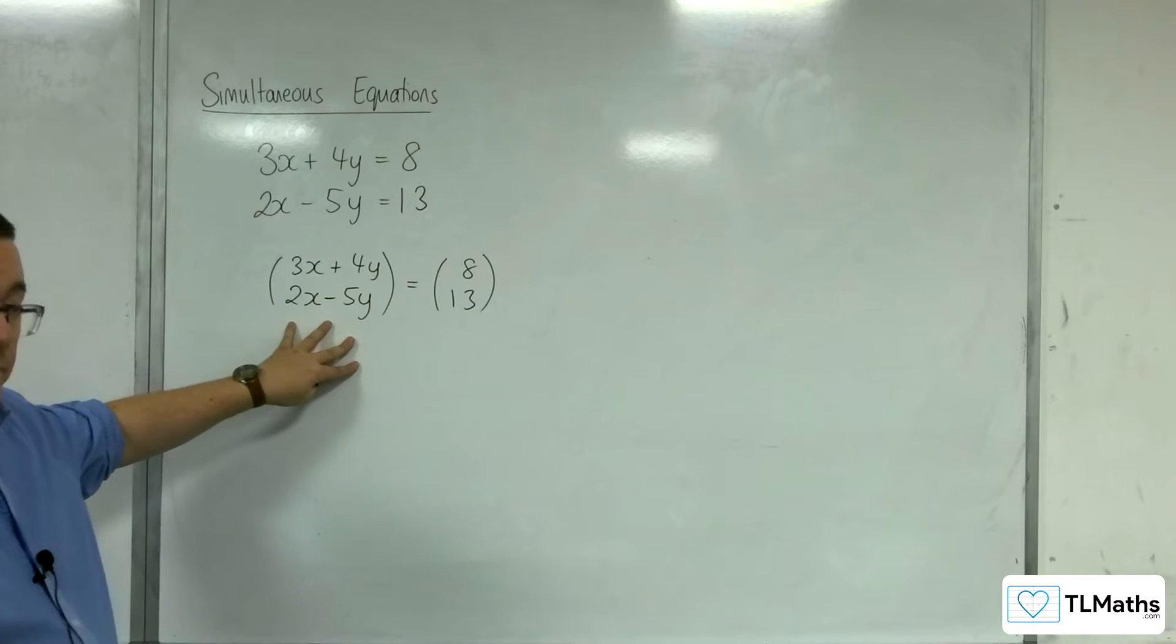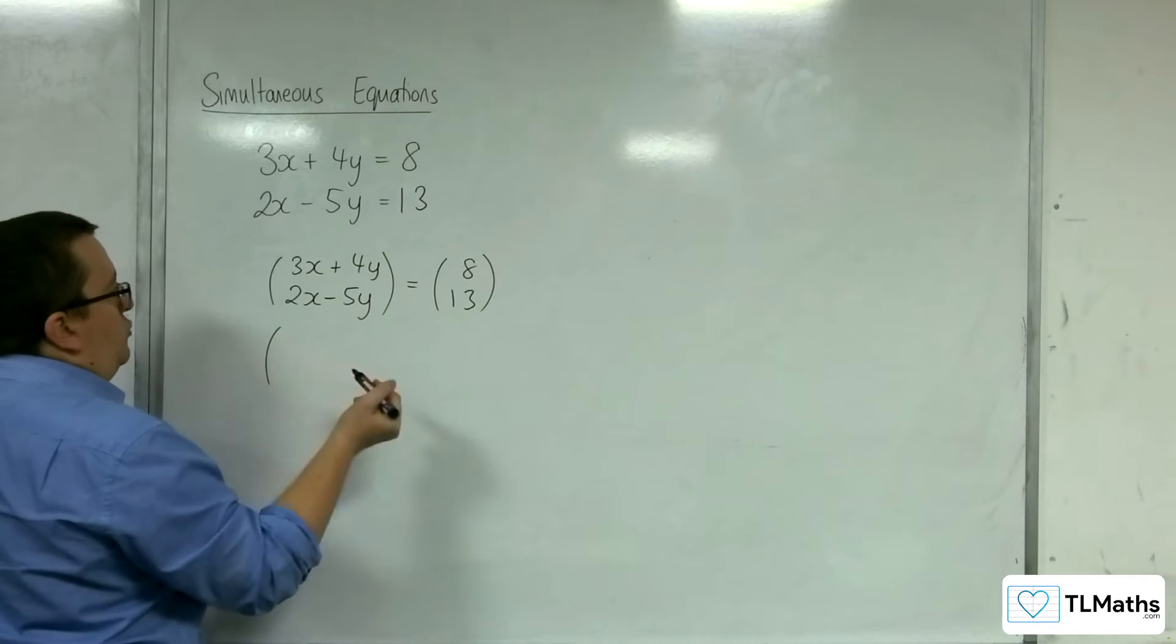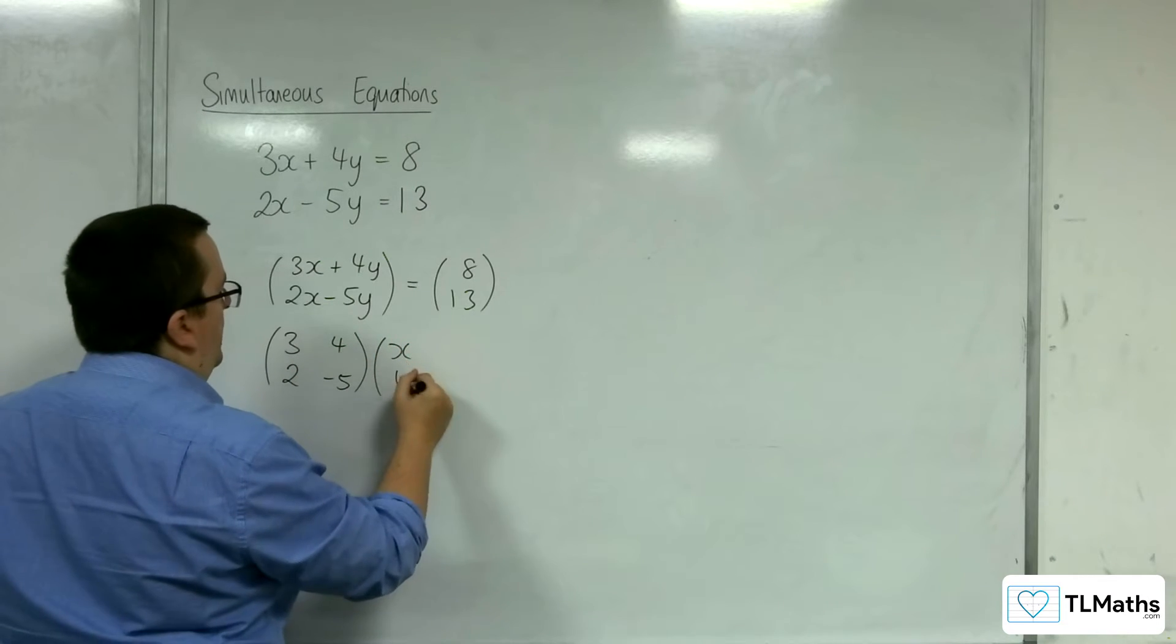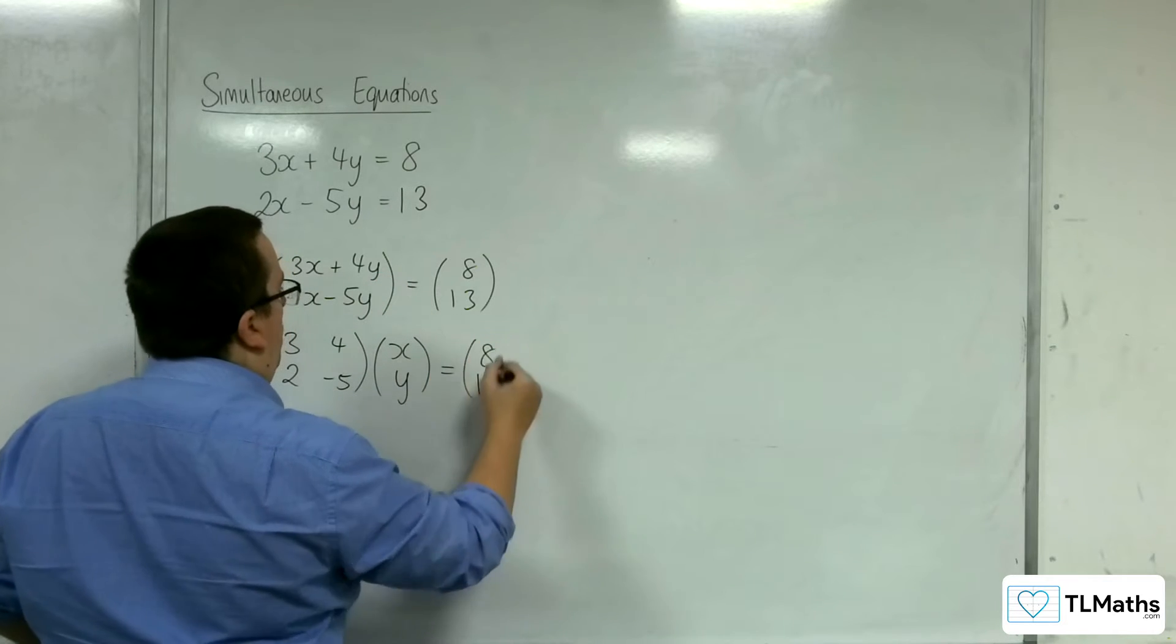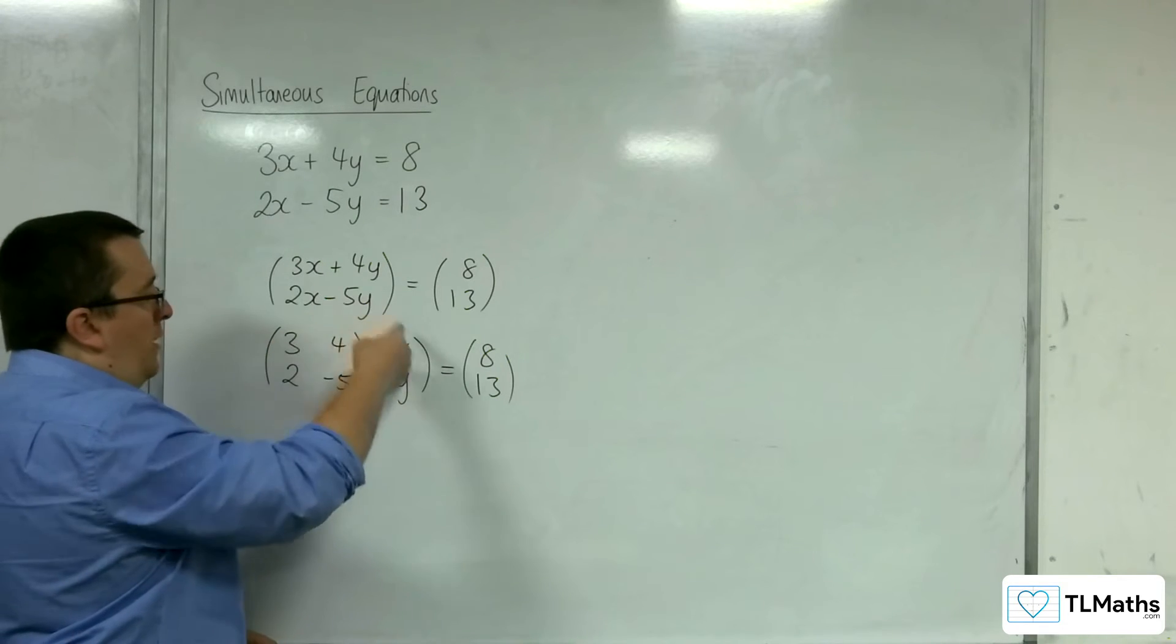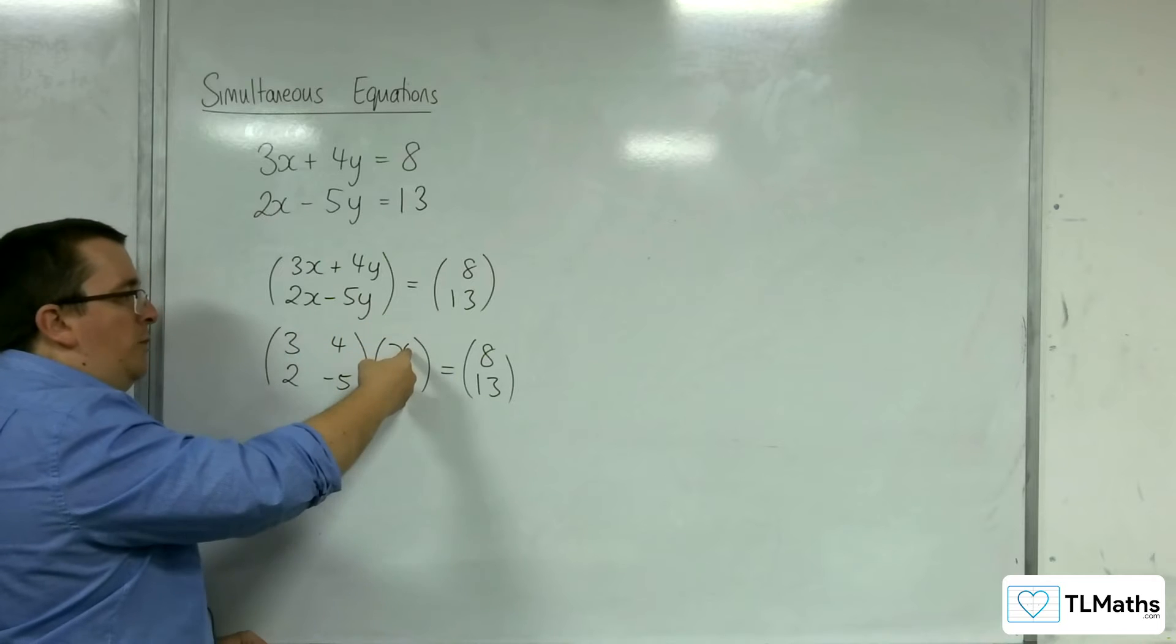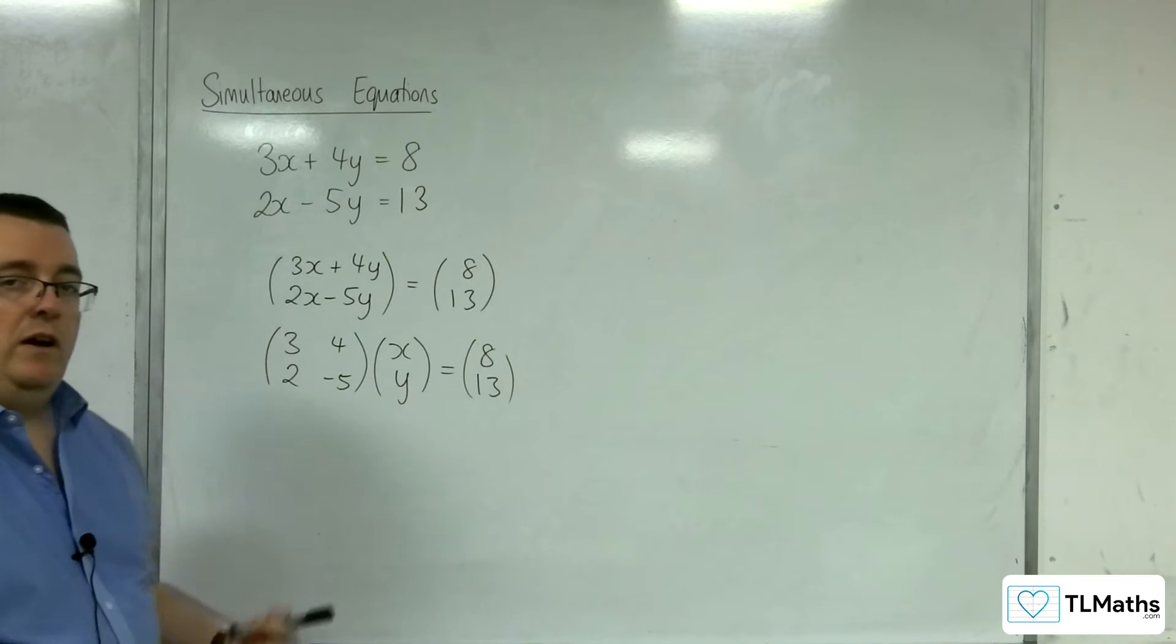Now this matrix here, what you can then do is you can say to yourself, well, I could have a matrix of the coefficients 3, 4, 2, negative 5, and multiply that with x, y, and I would get the same thing. Now why is that the case? Well, when you multiply matrices, you do the row by the column. 3, 4 multiplying with x, y, 3 lots of x, plus 4 lots of y. 2 minus 5 multiply with x, y, 2 lots of x, take away 5 lots of y. So these two lines are equivalent.